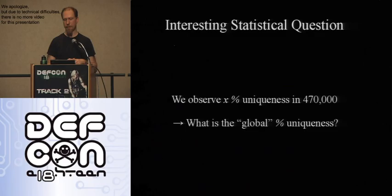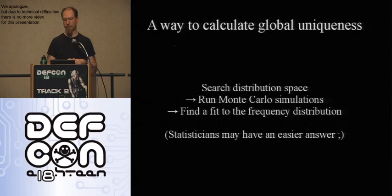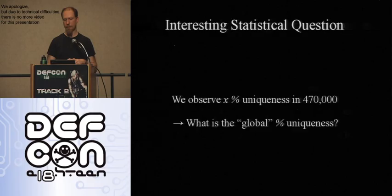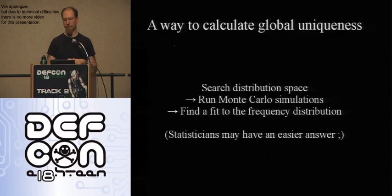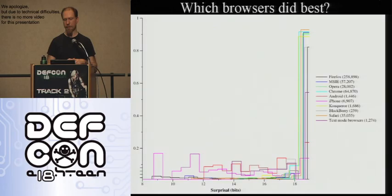An interesting statistical question is: you saw 84–94% uniqueness in your dataset of 500,000 people, but would people be less unique across the full 1–2 billion web users? There's a theory using Monte Carlo simulations — try a hypothesis probability distribution, run it through simulation, see if it produces a matching graph. But we didn't pursue this because our dataset of privacy-conscious users isn't meaningfully representative of the 1–2 billion browsers in existence. If someone has a less biased dataset, they could answer this question.